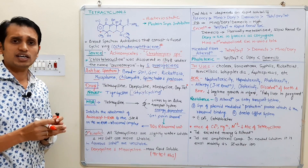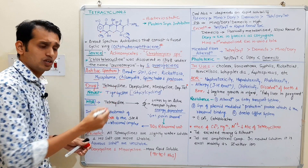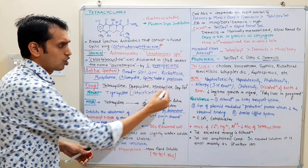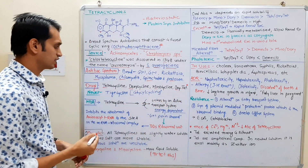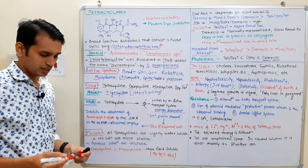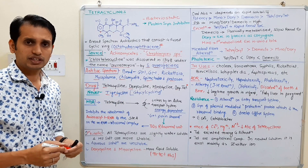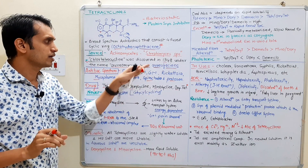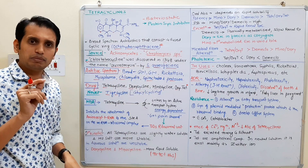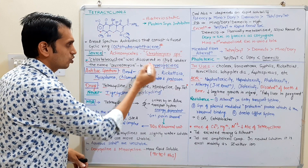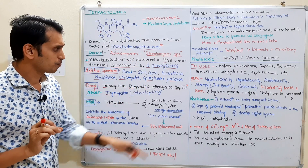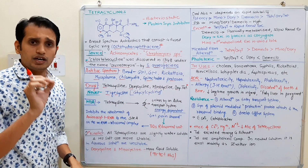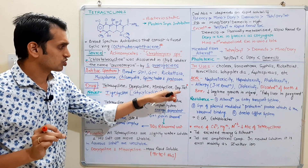The various drugs of the tetracycline class include: tetracycline, chlorotetracycline, doxycycline, minocycline, oxytetracycline, and the newer drug tigecycline. The natural drugs include chlorotetracycline, which is derived from Streptomyces aureofaciens. The second natural drug is demeclocycline, also from Streptomyces aureofaciens. Streptomyces rimosus is the main source for oxytetracycline.